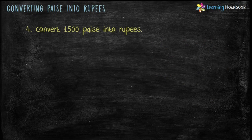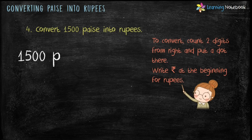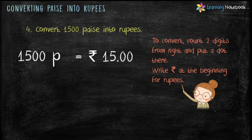Next question: convert 1500 paise into rupees. To convert paise into rupees, count two digits from the right and put a dot there. So put a dot before 00 and write Rupees at the beginning. 1500 paise equals Rupees 15.00. Rupees 15.00 means 15 rupees and 0 paise, so we can also write it as Rupees 15.